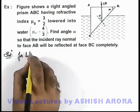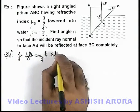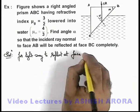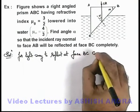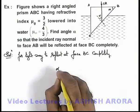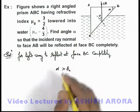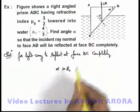For the light ray to reflect at face BC completely, the value of incidence angle alpha must be more than the critical angle for the glass and water interface.